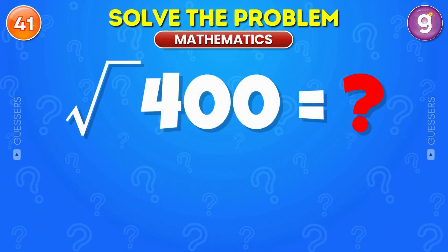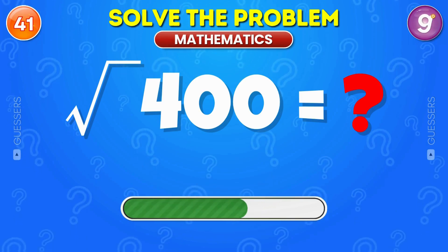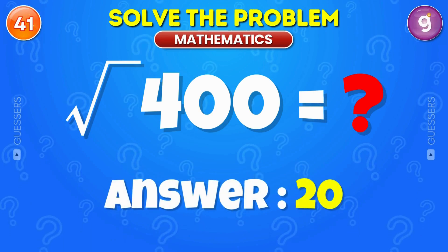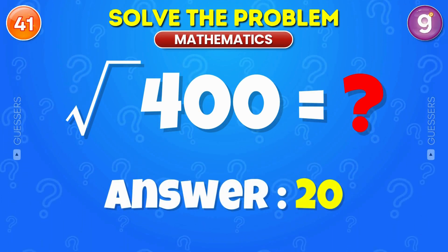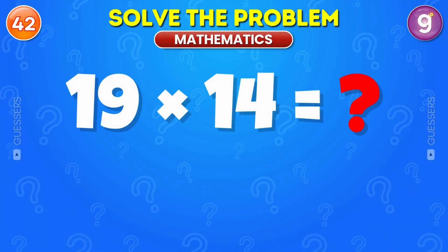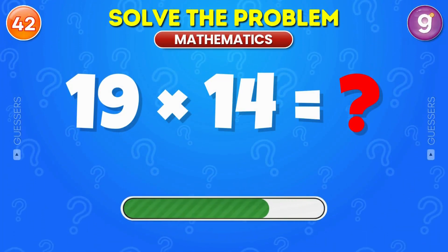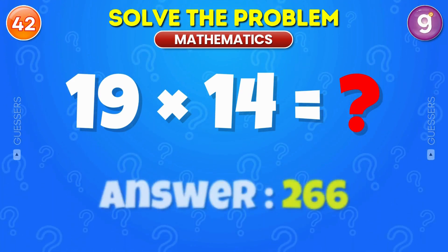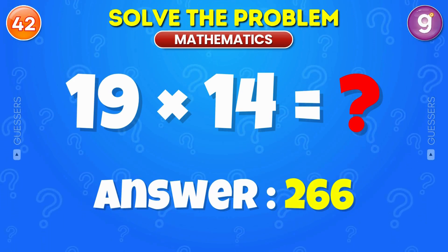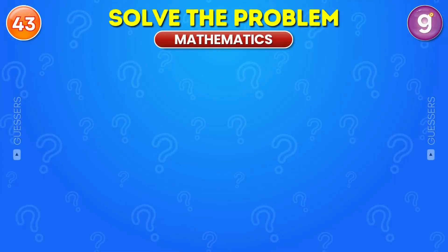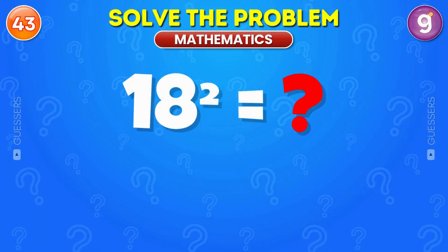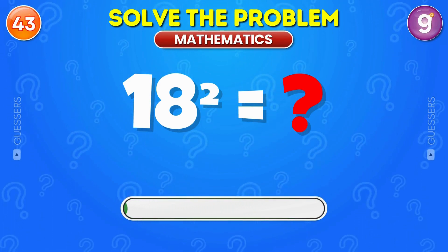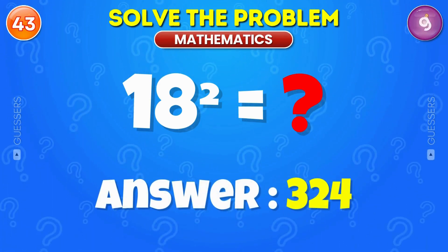What is the square root of 400? It's 20. Multiply 19 by 14. The answer is 266. What is 18 squared? It's 324.